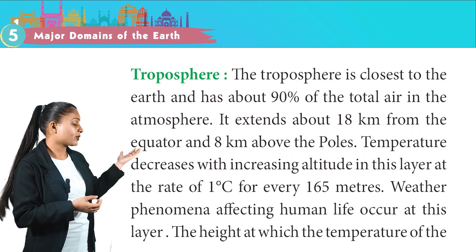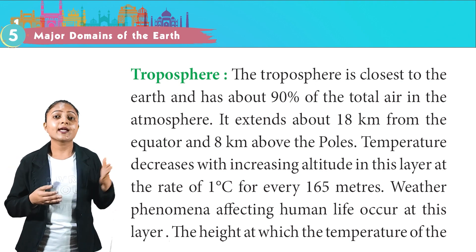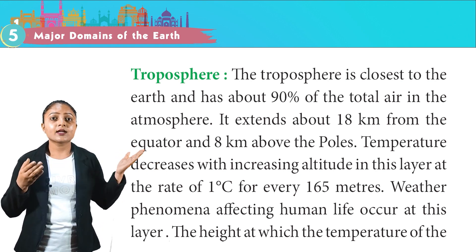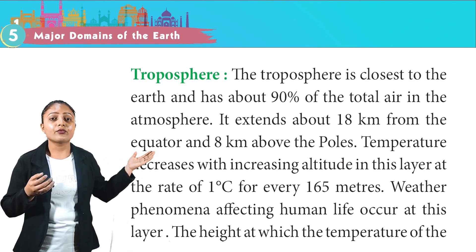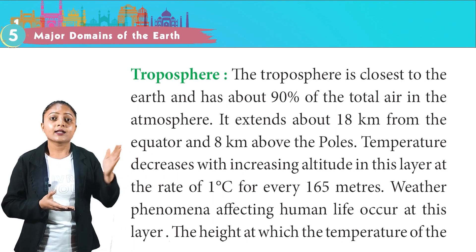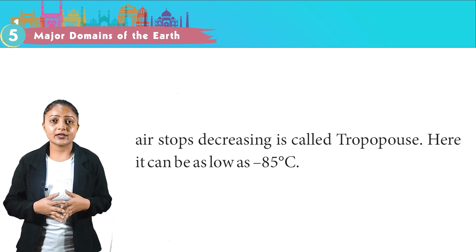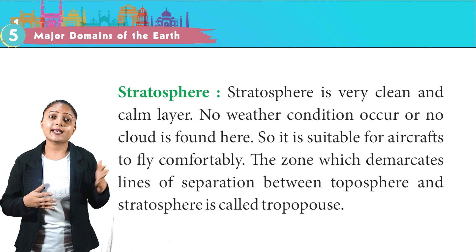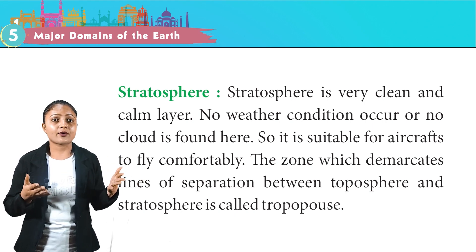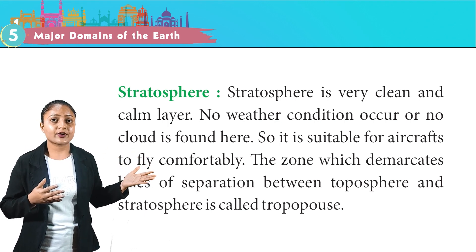The troposphere is closest to the earth and has about 90% of the total air in the atmosphere. It extends about 18 km from the equator and 8 km above the poles. Temperature decreases with increasing altitude at the rate of 1 degree Celsius for every 165 meters. Weather phenomena affecting human life occur at this layer. The stratosphere is a very clean and calm layer where no weather conditions occur and no clouds are found, making it suitable for aircraft to fly comfortably. The zone separating troposphere and stratosphere is called the tropopause.